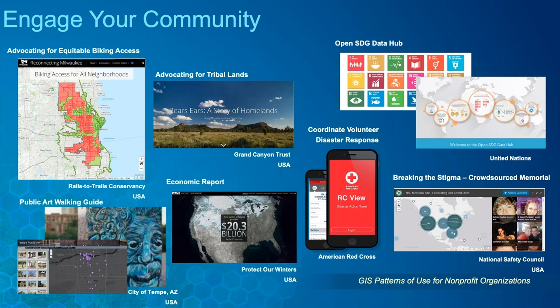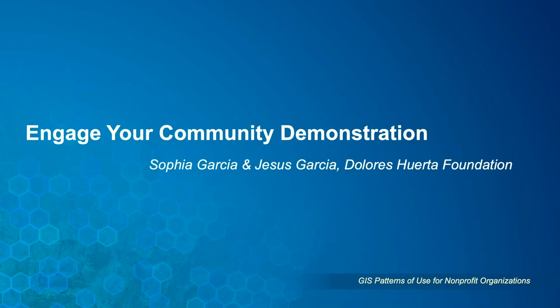Some examples from the Esri user community include Rails to Trails Conservancy, making available their analysis of Milwaukee's bike trails to bring people together and advocate for greater connectedness in their city. The Grand Canyon Trust leverages GIS to get the attention of their audience and communicate the importance of culture and place through maps and other visual mediums. With that, I'd like to turn it over to Sofia and Jesus of Dolores Huerta Foundation to show how they've been using GIS to engage communities.